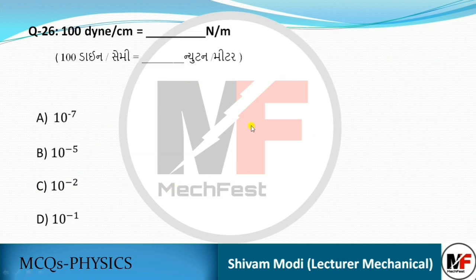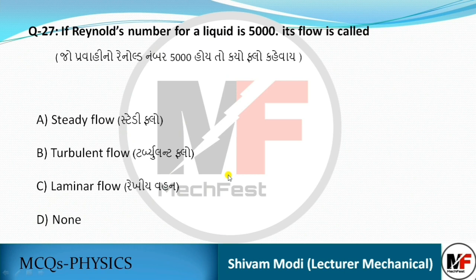10⁹ per centimeter is equal to 10⁻¹ Newton per meter. If Reynolds number for a liquid is 5000, its flow will be turbulent flow.